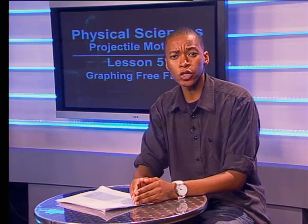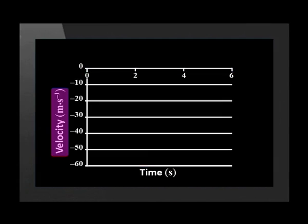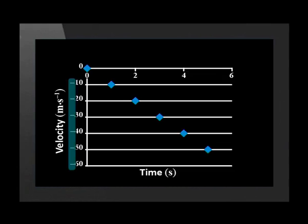So now we are ready to draw a graph of this motion. We plot time on the x-axis and velocity on the y-axis. We plot our points. Since the ball is moving downwards throughout the motion, all the velocity values are negative. This gives us a straight sloping line. The line has a constant negative gradient.